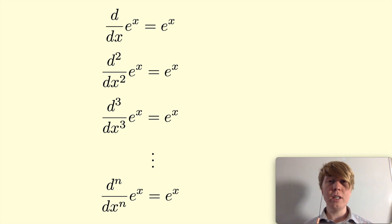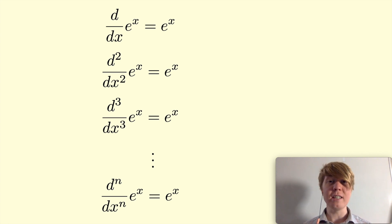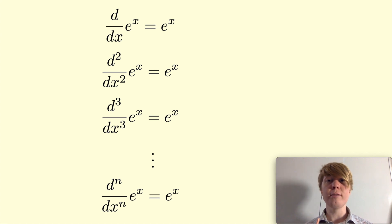You know how when you have the function e to the x and you differentiate this, you just get back your original function e to the x. Then you differentiate it again, you still get the same function back. So however many times you differentiate, you always just get back to your original function. It's a really nice property of e to the power of x.